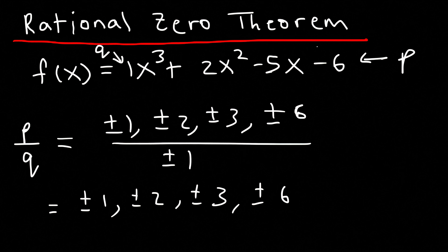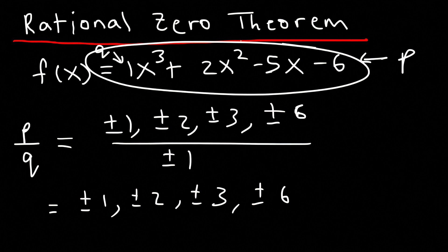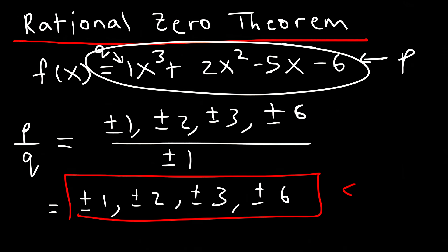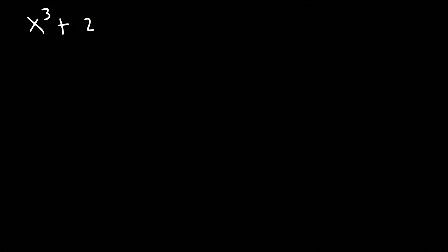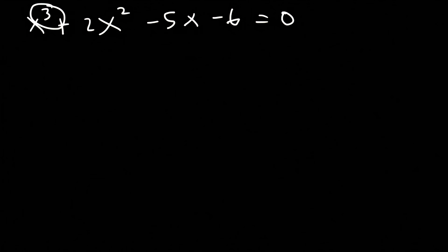If we set this function equal to 0, then the solutions to that equation will be some of these numbers listed here. So let's go ahead and do that: x³ + 2x² - 5x - 6 = 0. Notice that the degree of the polynomial is 3, so that tells us there are three values of x, which could be real numbers or imaginary numbers.